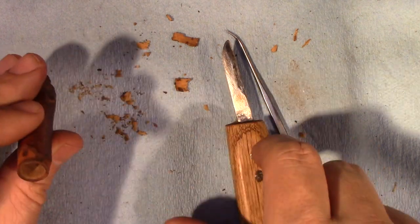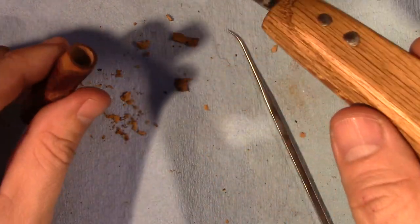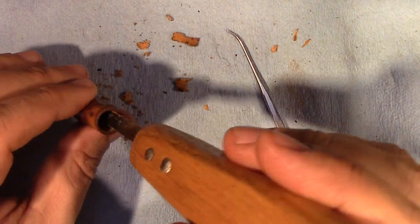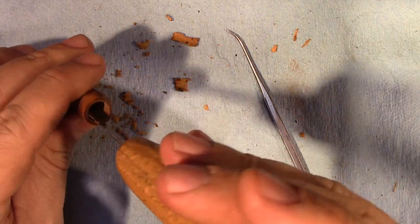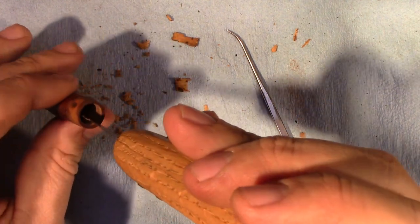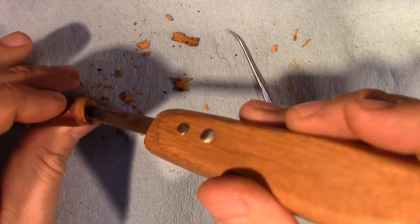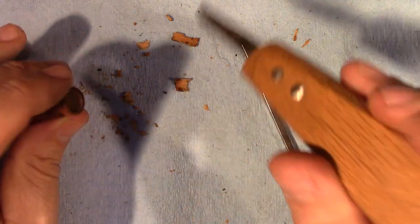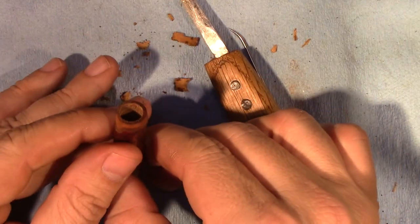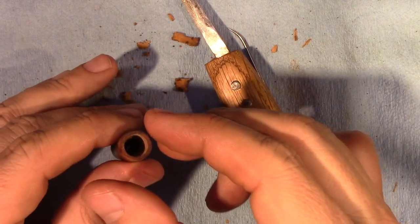So I got that pretty well cleaned out just using some 220 grit sandpaper on the inside. And that's roughed up the surface a bit as well. I can feel with the knife that there's no bumps in it. It's just the roughness from the sandpaper, which is exactly what I want in order to have the glue grip to it.